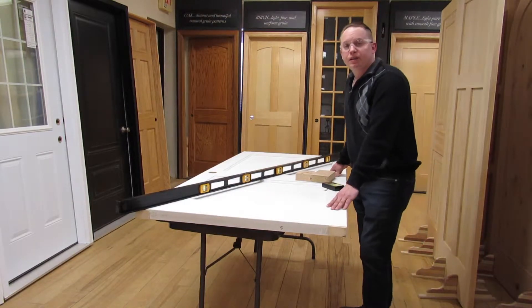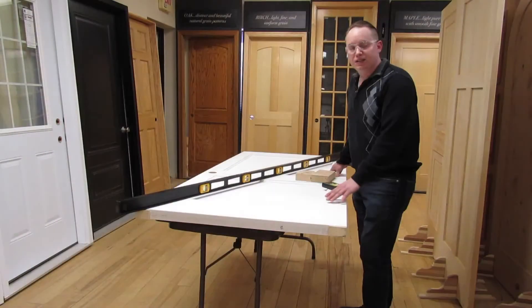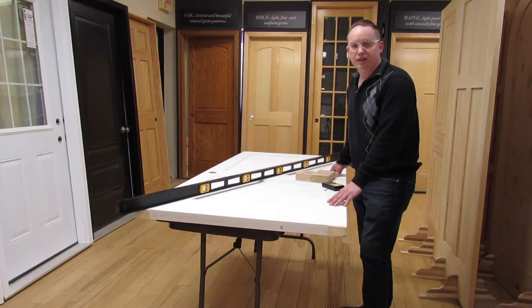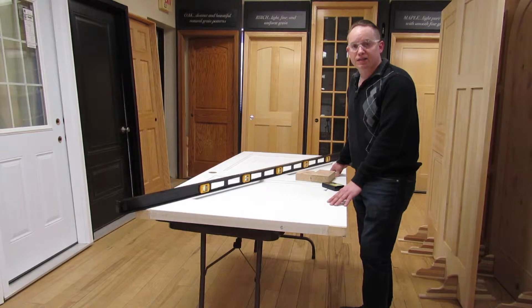Now at Woodport we run misters over all of our components that run through our lamination line to make sure that there's no veneer pops. We constantly introduce moisture throughout our plants to ensure that all of our wood components on the racks maintain about 11 to 12 percent moisture reading.